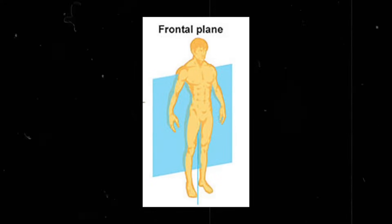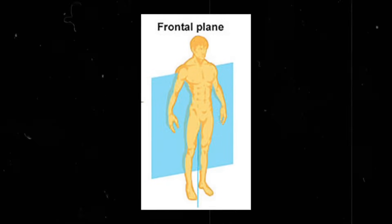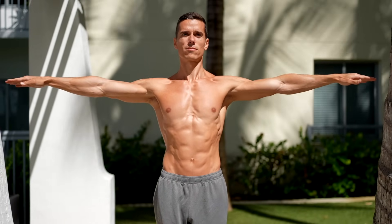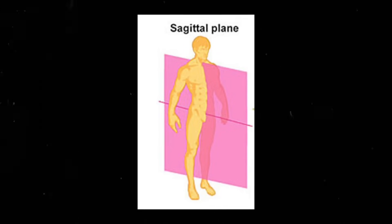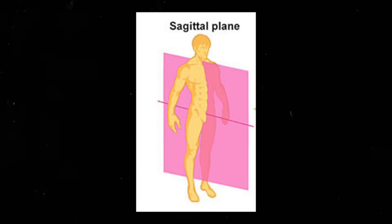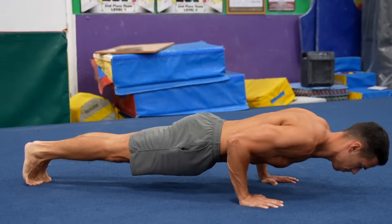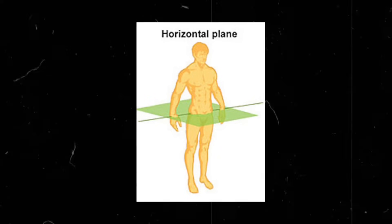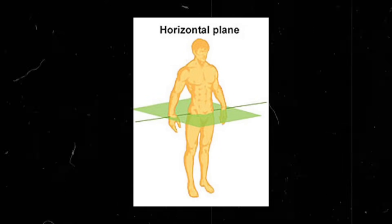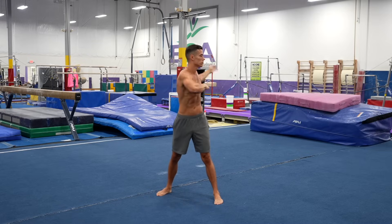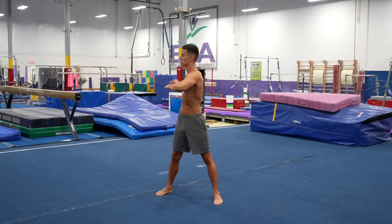Imagine your body divided by three invisible planes that help us understand movement. The frontal plane divides your body into front and back parts — for example, when you lift your arms to the side. The sagittal plane runs vertically and divides your body into left and right sides; movements like squats or push-ups happen here. The transverse plane runs horizontally, dividing your body into upper and lower parts; rotational movements such as twisting your torso occur in this plane.